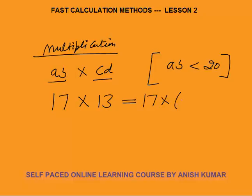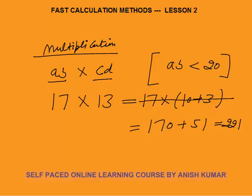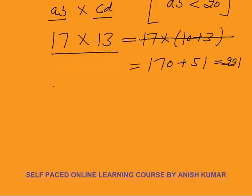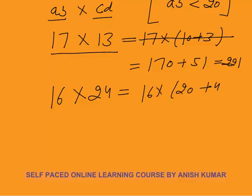To multiply 17×13 mentally, imagine: 17×(10+3) = 170 + 51 = 221. In the exam, you don't write the breakdown — you directly write: 17×10=170, plus 51 = 221. Next: 16×24. You must know the table of 16. This is 16×(20+4) = 320 + 64 = 384.